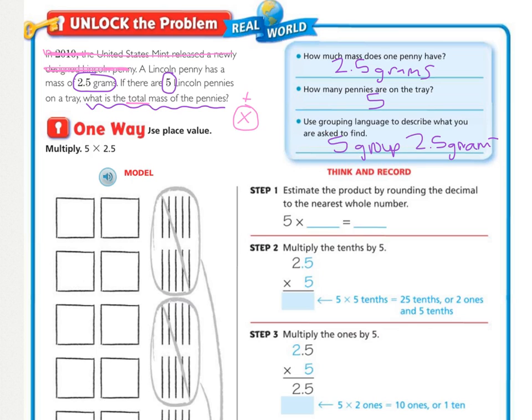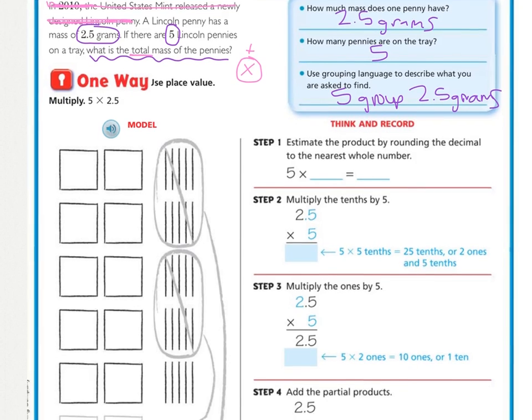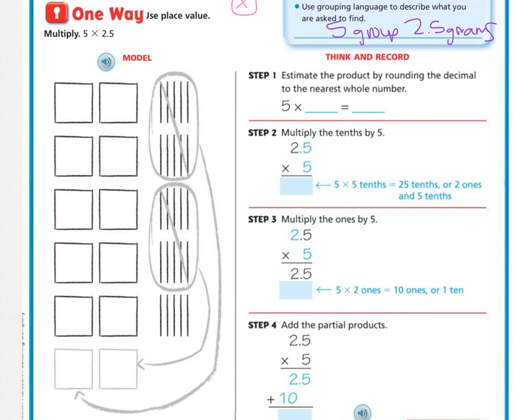So, now, that's our multiplication sentence of multiplying. It's 5 times 2 and 5 tenths. So, as we work through our problem, we have our quick drawing here, which all it's going to be showing is what we're going to do with our numbers and digits over here. So, the first step is to estimate. Estimate the product by rounding the decimal to the nearest whole number. So, we have 2 and 5 tenths rounding to the nearest whole number. We circle the 2, underline the 5. The 5 tells us to increase to the next. So, we are rounding up to 3, which is 15. 5 times 3 is 15.